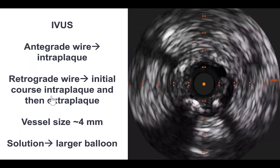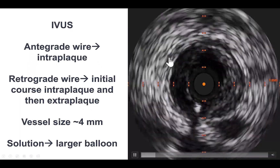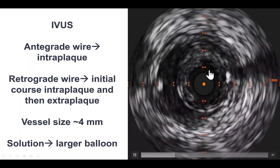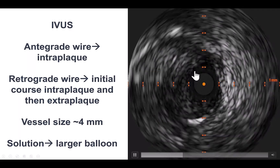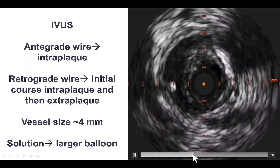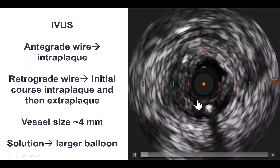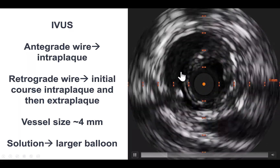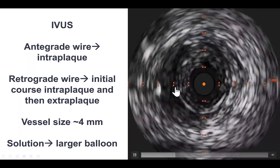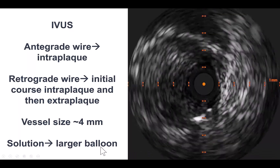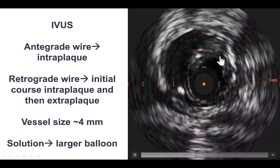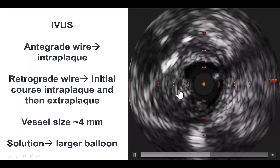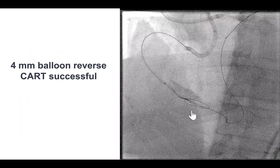When there is such difficulty with reverse CART, one solution is intravascular ultrasound. The IVUS was placed over the antegrade wire, which — to our surprise — was in the intraplaque location. So the antegrade wire was intraplaque but the retrograde wire was extraplaque, the opposite of what we anticipated. The solution in this situation is to bring a larger balloon over the antegrade wire and create a fenestration into the extraplaque space where the retrograde wire is located.